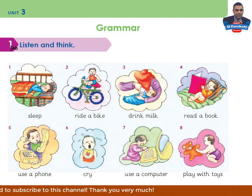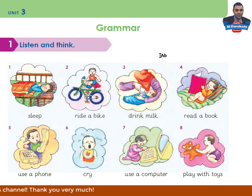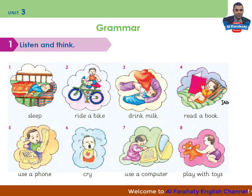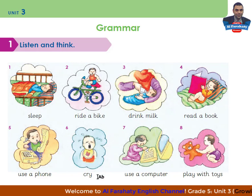Activity 1 - listen and think. Look at these pictures and read the verbs and phrases written under each picture. Now let's listen and try to point to the correct picture. Listening 3.3. Read a book - picture 4. Cry - picture 6.